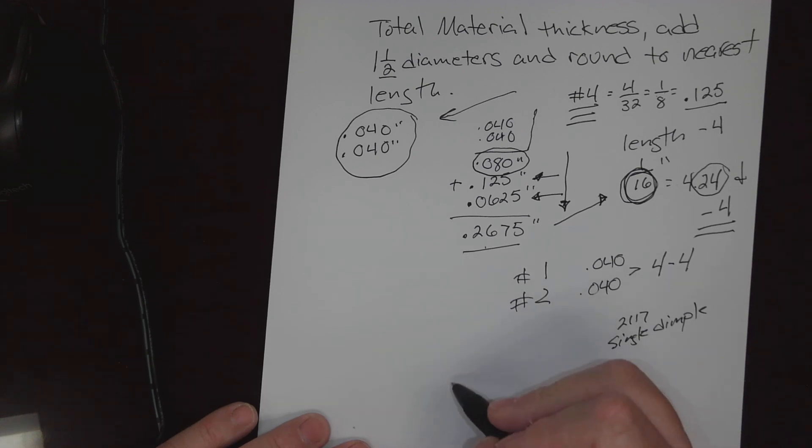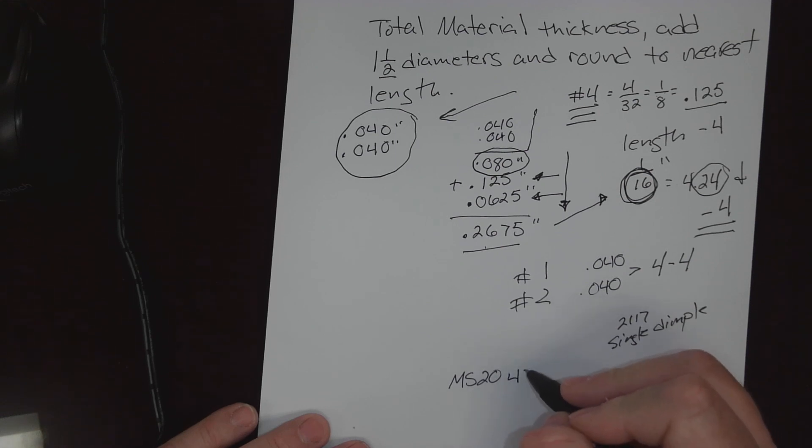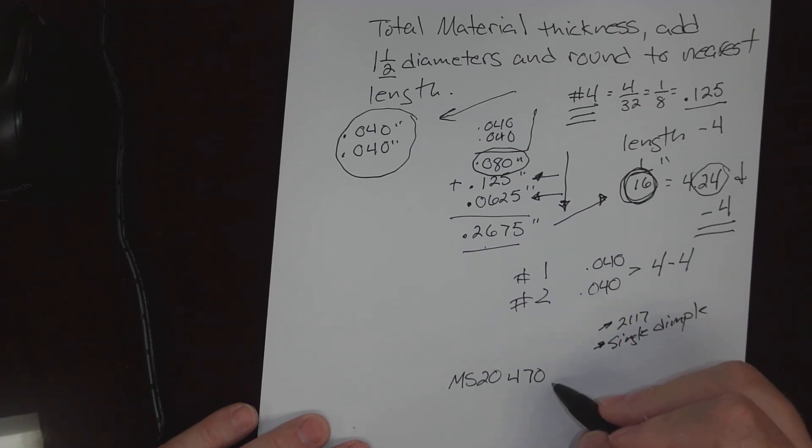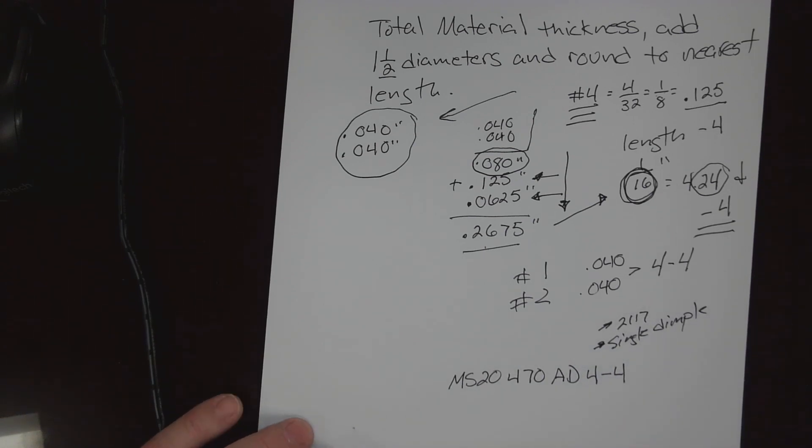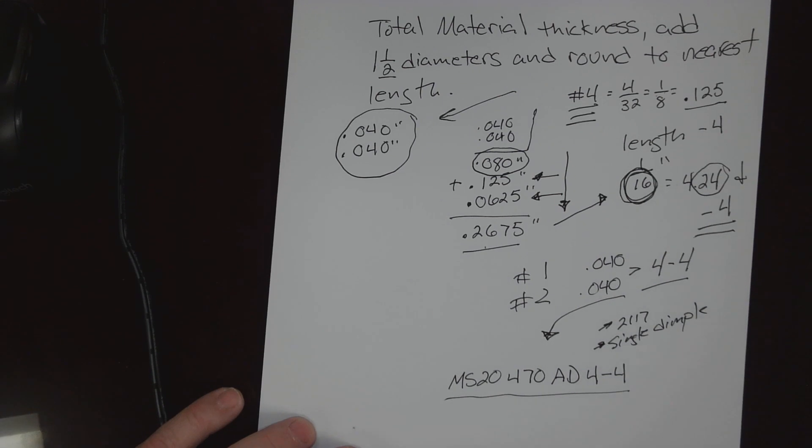Now let's put the whole code back together and we'll go order some of these rivets. To start with, we're going to be in that MS for that mil spec 20 category. I want to use a protruding head or universal head, so that's a 470. I want to use a 2117 or a single dimple, that would be an AD, and then finally my diameter would be a 4 and my length would be a 4. So by applying those two rules and knowing a little bit about the code, we can take our sheet metal information, only use these rules, do the math, and we can determine the exact correct rivet, and then we can convert that into the code in order to order those rivets or to go pull them out of supply.